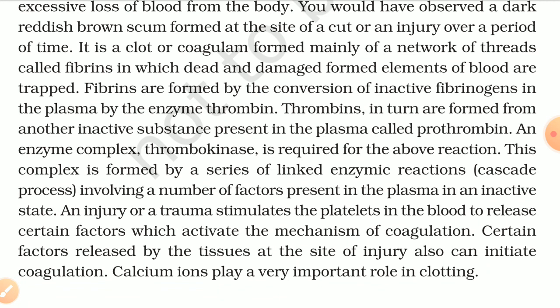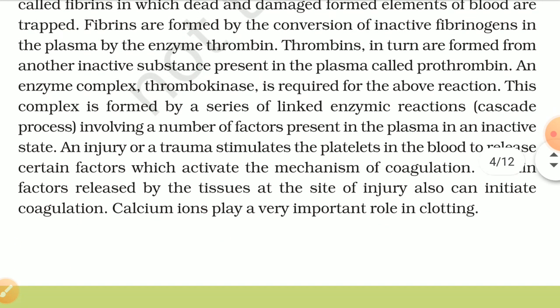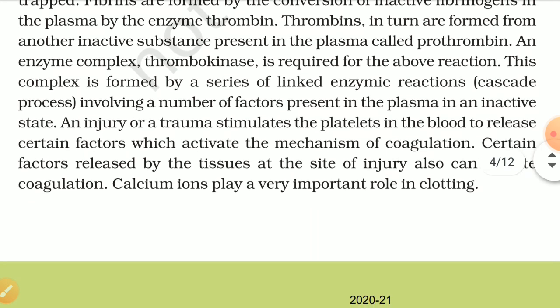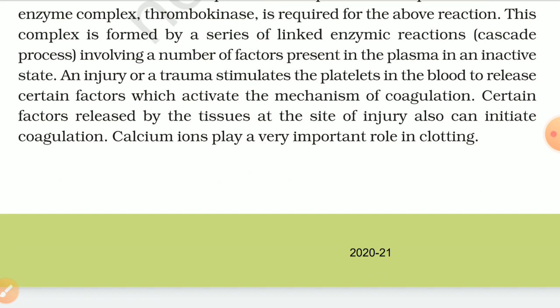Thrombin in turn is formed from another inactive substance present in the plasma called prothrombin. An enzyme complex, thrombokinase, is required for this reaction. This complex is formed by a series of linked enzymatic reactions — a cascade process — involving a number of factors present in the plasma in an inactive state. An injury stimulates the platelets to release certain factors which activate coagulation. Certain factors released by the tissue at the site of injury also initiate coagulation. Calcium ions play a very important role in clotting.